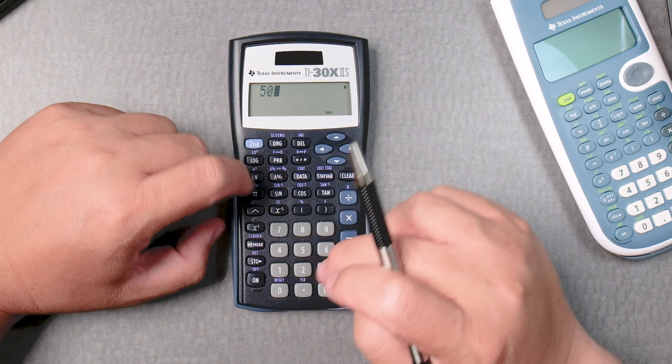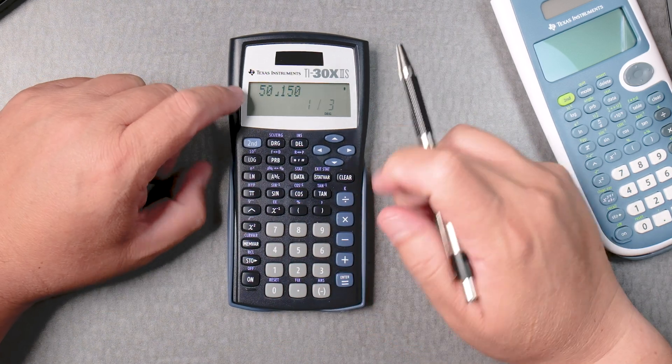Let's say you had 50 ABC 150 and you want to reduce that, it does it automatically for you.